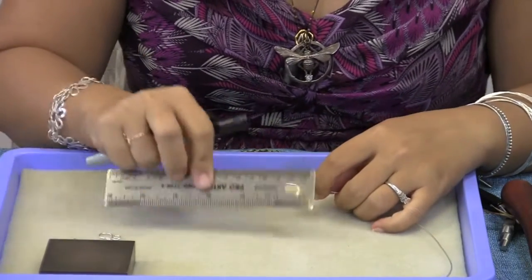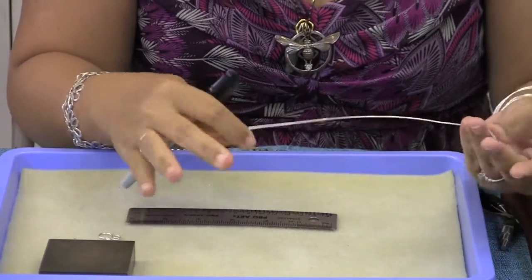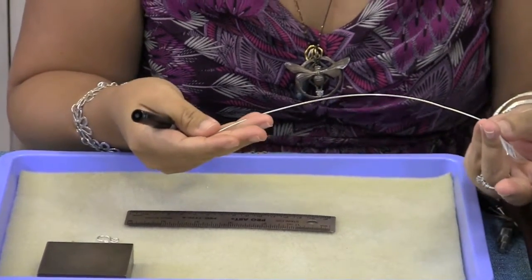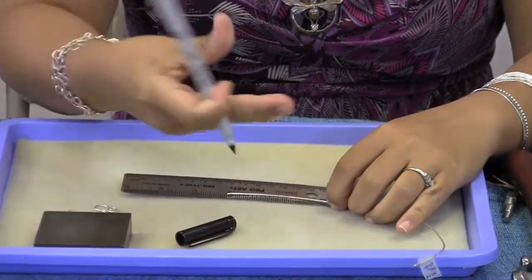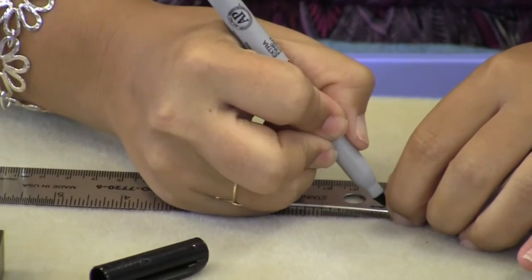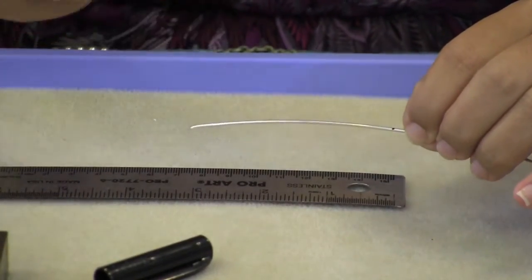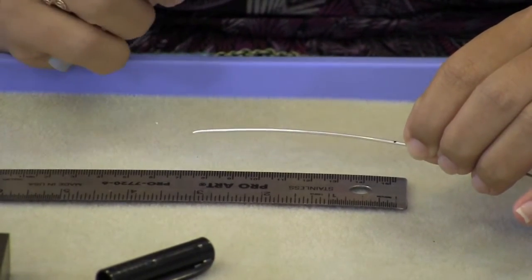However if you want to know how much wire you're actually using for your project you can either start with a known length of wire like exactly one foot or you can mark along the wire with a Sharpie pen and then subtract the remainder that's left to figure out how much wire you used in your clasp.